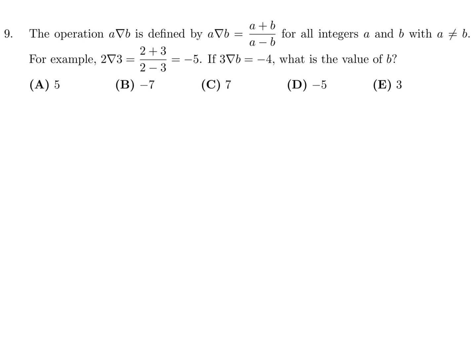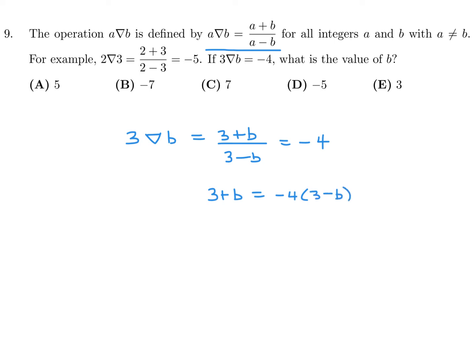Question number 9. The operation A symbol B is defined as (A plus B) over (A minus B). If 3 symbol B equals negative 4, what is the value of B? So (3 plus B) over (3 minus B) equals negative 4. Multiplying out: 3 plus B equals negative 4 times (3 minus B), giving negative 12 plus 4B. That simplifies to 15 equals 3B, so B equals 5. Number 9, the answer is A.